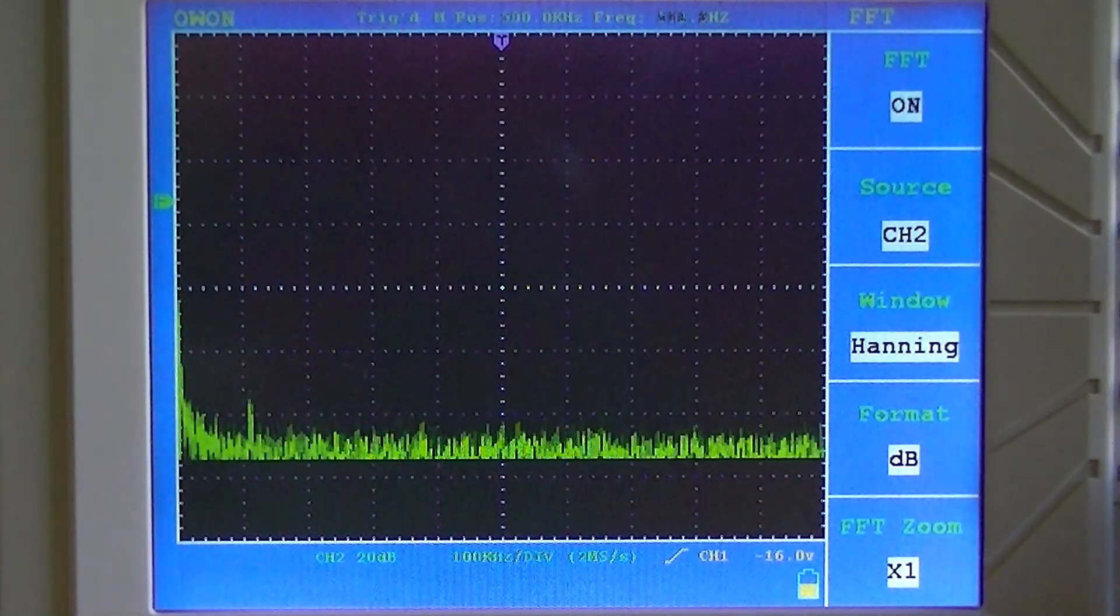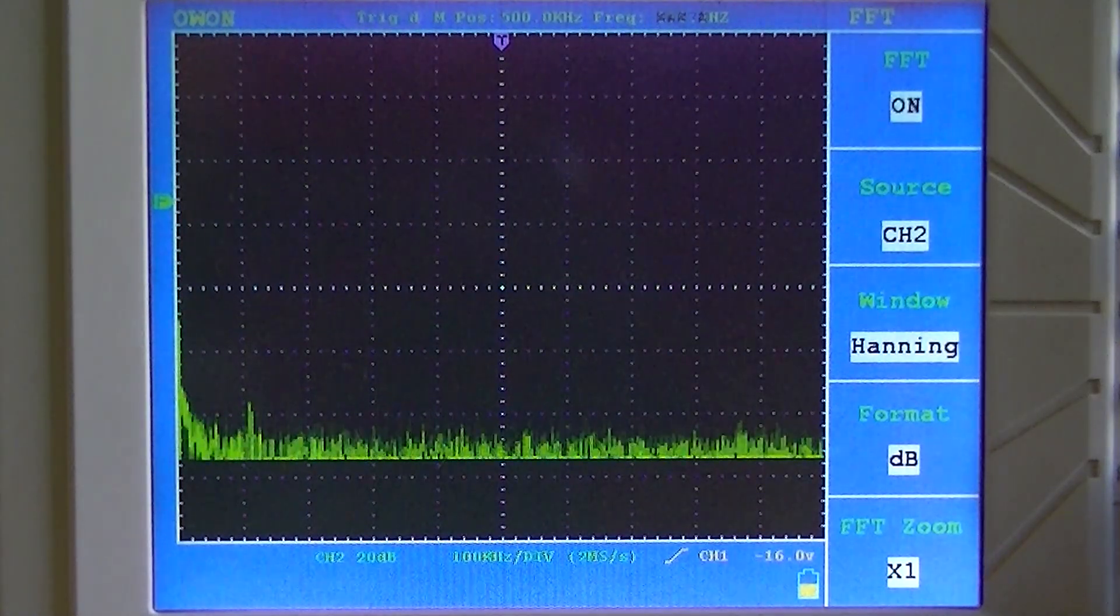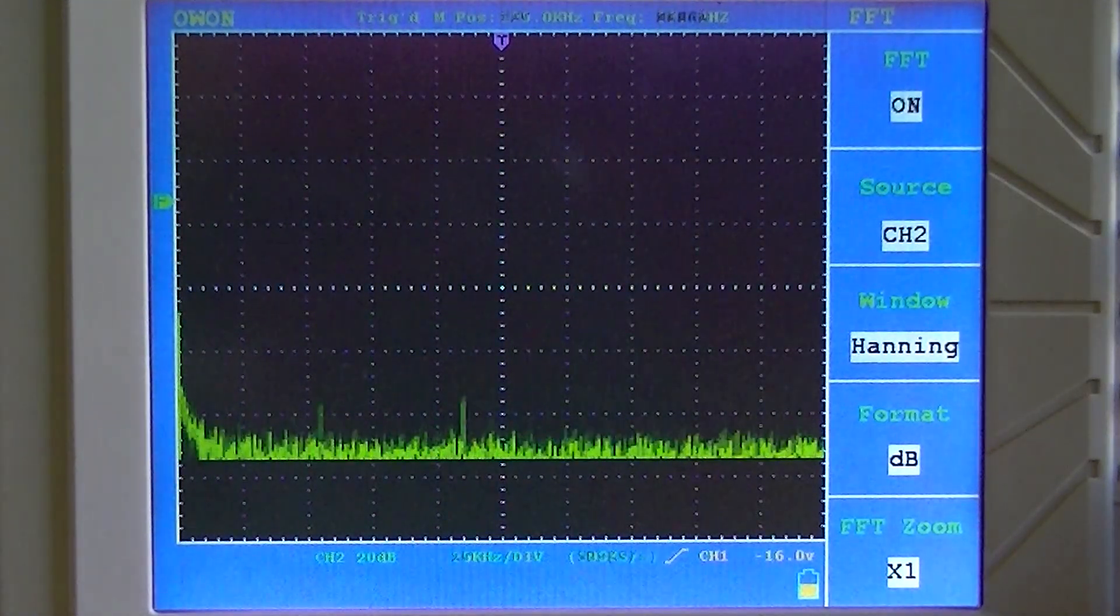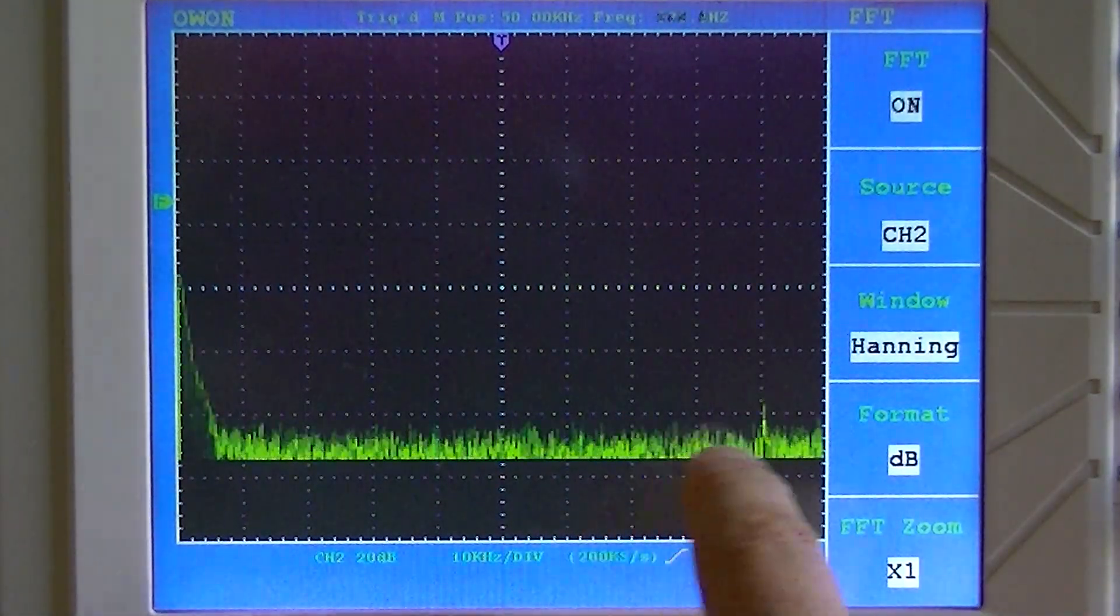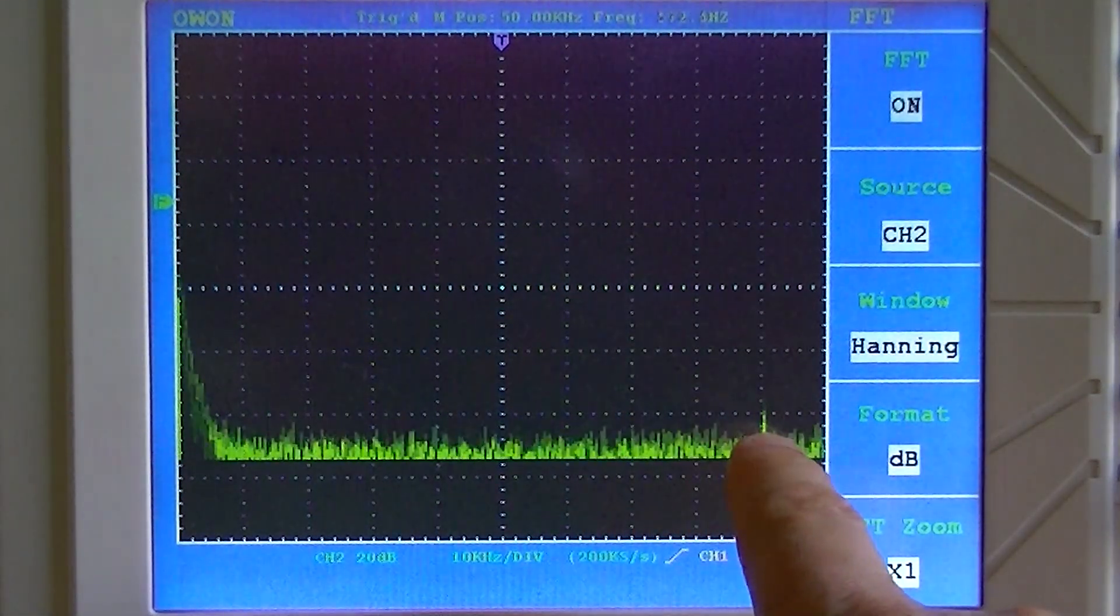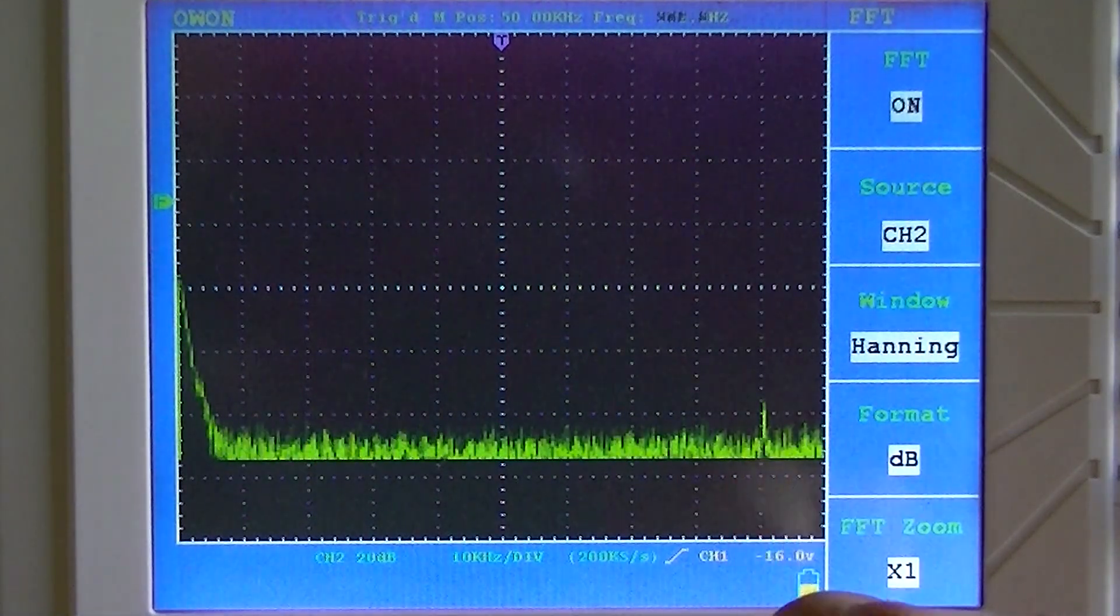Okay, so we're on 100 kilohertz per division in the horizontal direction. And we can see that there's a harmonic right here. So we're on 10 kilohertz per division. There's a little harmonic around 90 kilohertz, so that will be causing an emission.